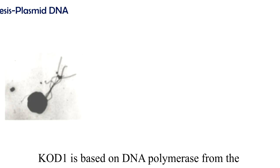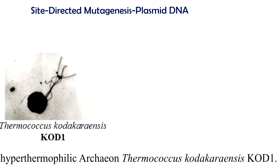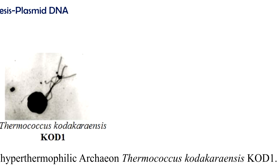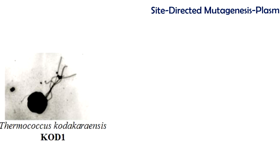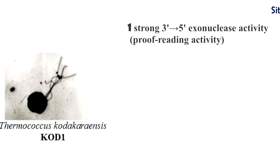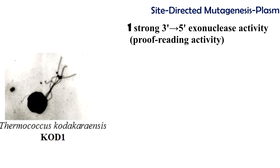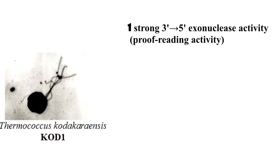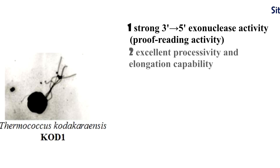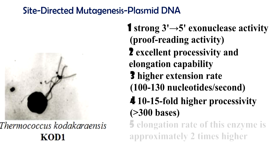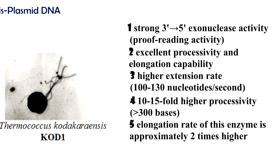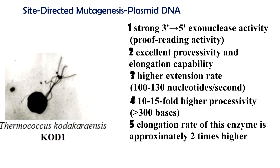KOD1 is based on DNA polymerase from the hyperthermophilic archaeon Thermococcus kodakarensis KOD1. KOD1 exhibits excellent high PCR fidelity and efficiency. KOD1 DNA polymerase exhibits strong 3' to 5' exonuclease activity, which is proofreading activity — an activity that Taq DNA polymerase lacks. Moreover, this enzyme exhibits excellent processivity and elongation capability, showing a five-fold higher extension rate and 10-15-fold higher processivity than others. The elongation rate is approximately two times higher than that of Taq DNA polymerase.